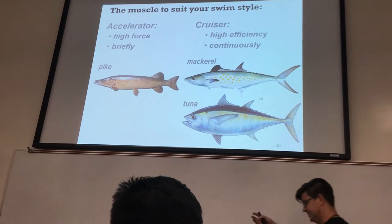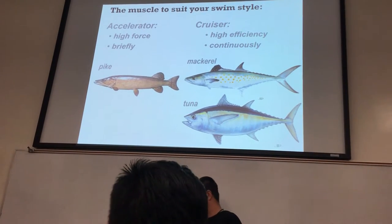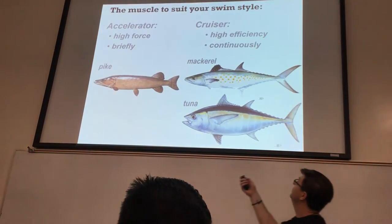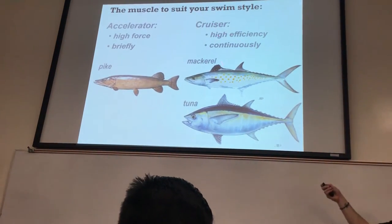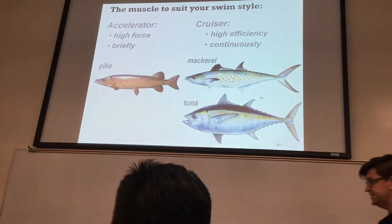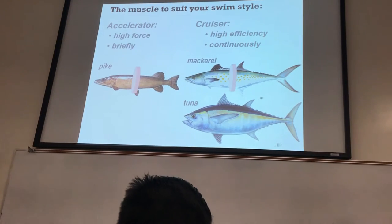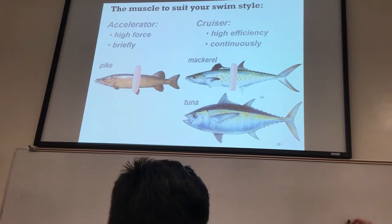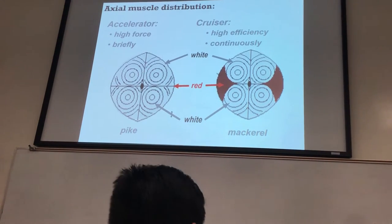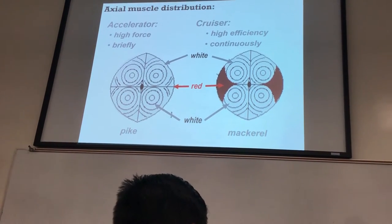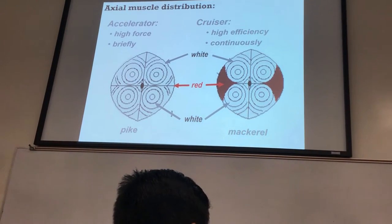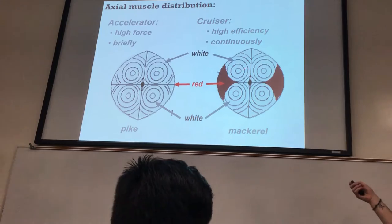If you go back to the slides we looked at on Wednesday comparing white muscle to red muscle, the red muscles are going to be found in our cruisers — a lot of mitochondria, a lot of blood, very rich blood supply. So if we take a cross-section of these animals, you can see it's basically all white muscle in the accelerator. But in the cruisers, you can see quite a bit of red muscle, and it also has some white muscle.